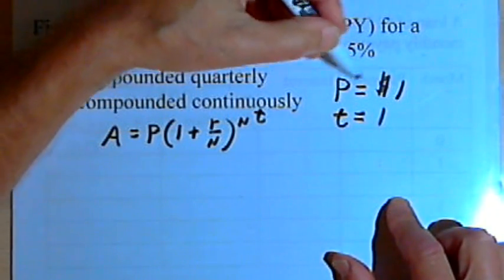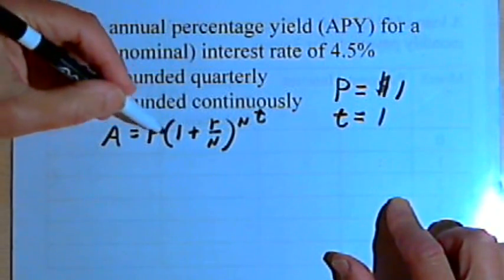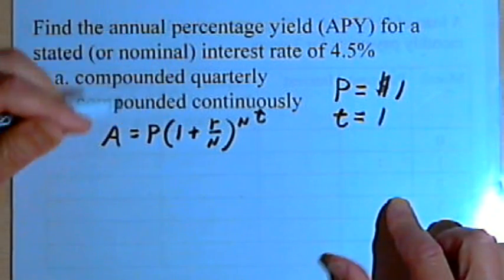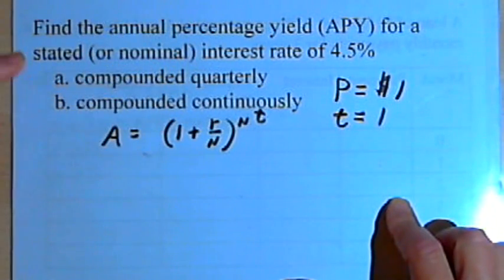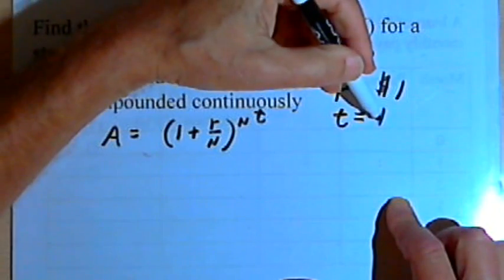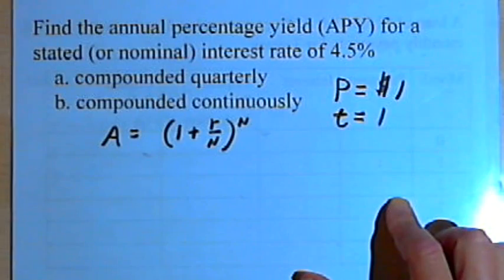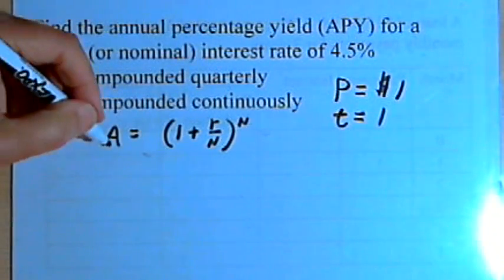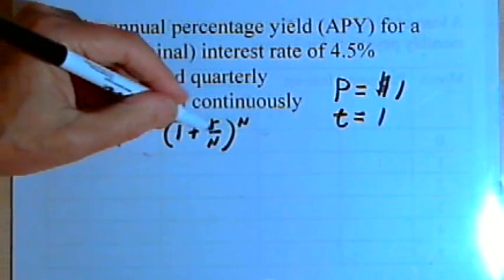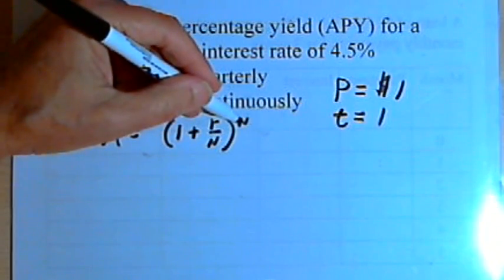But remember, principal is one dollar, so we can just get rid of that P altogether. And t is 1, so multiplying n times 1 is not going to help, so we'll just get rid of the t. Now we've got A equals 1 plus r over n raised to the n.